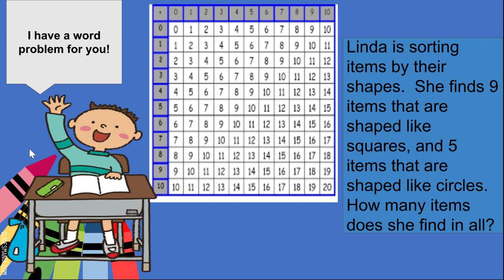Let's look at a word problem together. Linda is sorting items by their shapes. She finds 9 items that are shaped like squares and 5 items that are shaped like circles. How many items does she find in all? Pause the video and take a shot at this one.